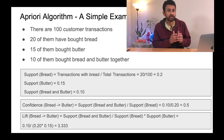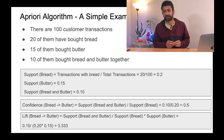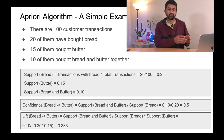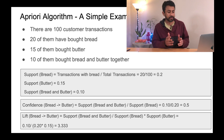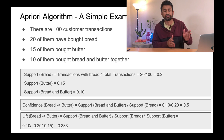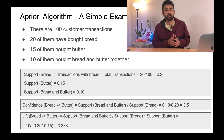Similarly, the support for butter is 0.15 and the support for bread and butter together is 0.1. Once we have identified the support for all three combinations, we identify the confidence. Confidence is the support of bread and butter divided by the support of bread — that is 0.1 divided by 0.2, which equals 0.5.